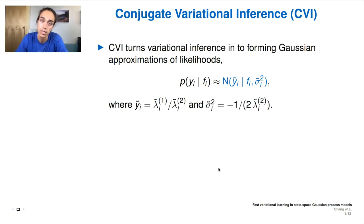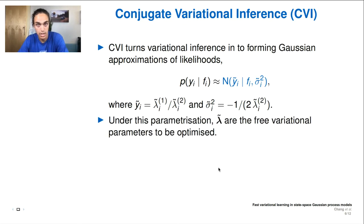So here we can see that the likelihoods, which are non-Gaussian, are approximated by Gaussian likelihoods. So we have pseudo-data observations which we've used Y tilde and corresponding variances, which we depict as sigma squared tilde, which in turn are determined by the natural parameters of the approximate likelihoods, which we call lambda tilde one and lambda tilde two. So the key takeaway here is that under this parameterization of the variational Gaussian process, these lambda tildas are now our free variational parameters.